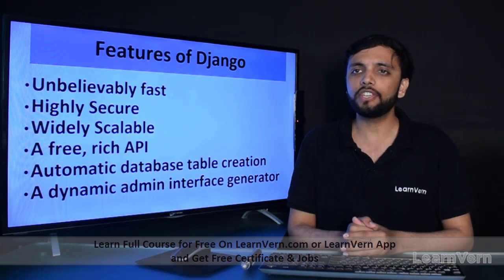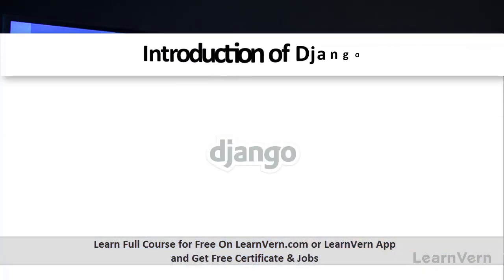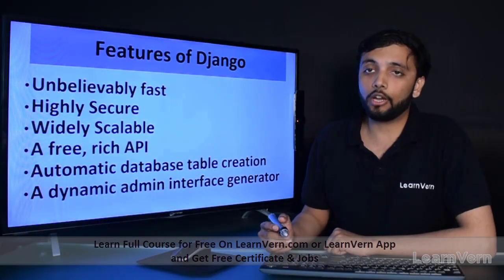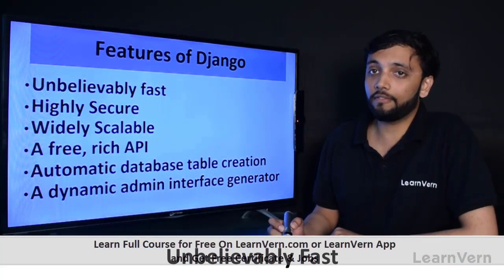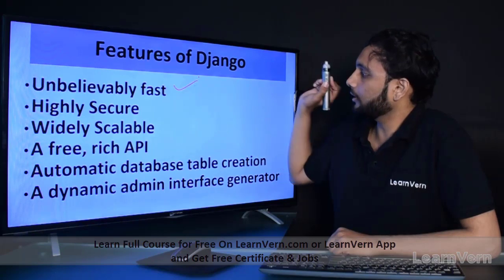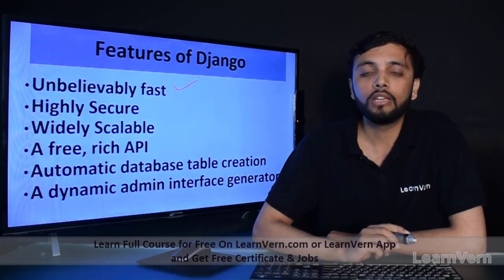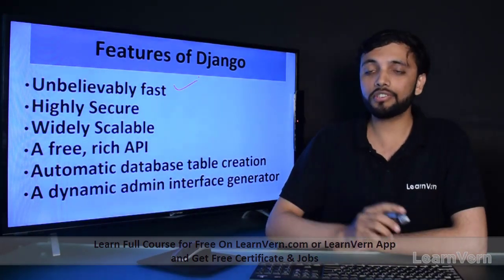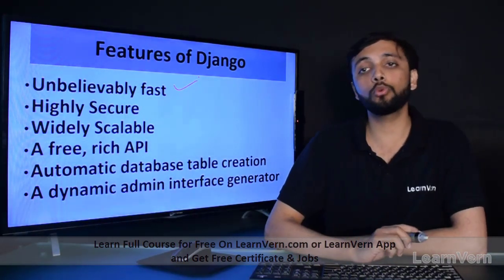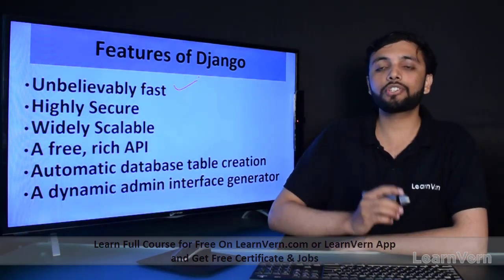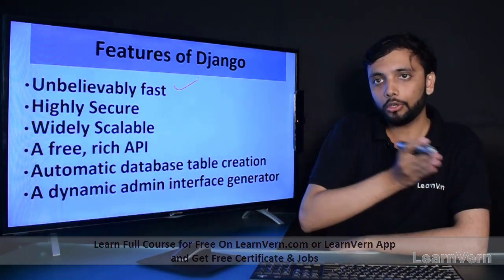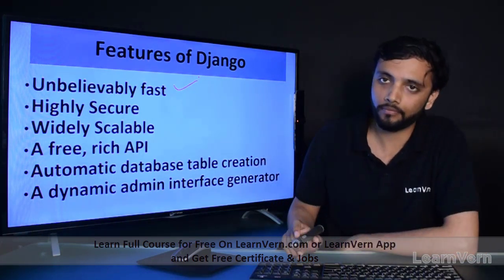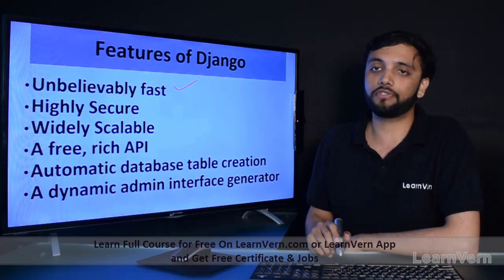Let's go further — what are the features of Django and why is Django most widely used? Django has so many distinctive features. The first main feature is that Django is unbelievably fast. Django was designed to help developers take an application from concept to completion as quickly as possible.